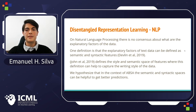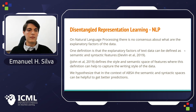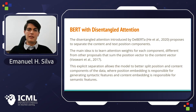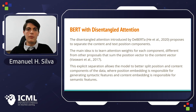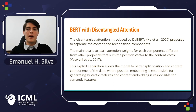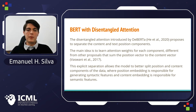One definition is that explanatory factors of text data can be defined as semantic and syntactic features. Other authors define the style and semantic space of features, where this definition can help capture the writing style of the authors. We hypothesize that in the context of ABSA, the semantic and syntactic spaces can be helpful to get better predictions.